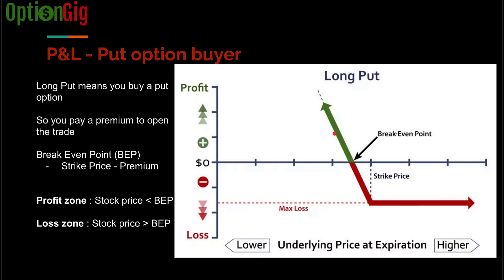Let's take a step back and understand why someone would have bought this put option as an option buyer. It is to protect themselves against the stock going down. But you already paid an insurance premium for it, so until the stock falls below the amount of the insurance you paid, the trade is not profitable. The green zone is the profitable zone — if the stock goes beyond your breakeven point, it is profitable. The maximum loss here is the amount of the initial premium paid, irrespective of whether the stock goes to $400 or $500.